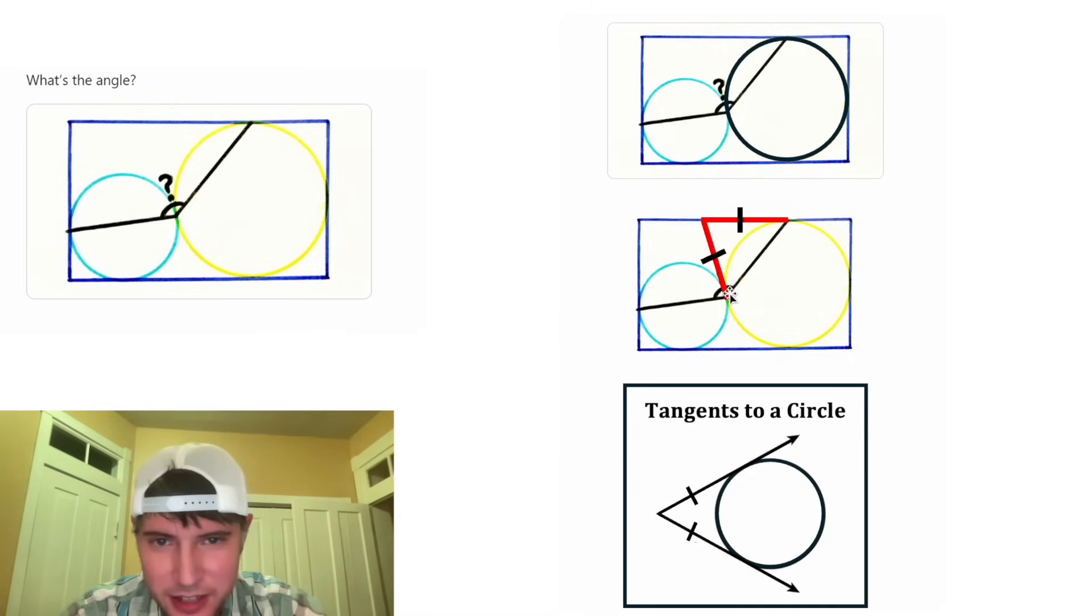And then if we take this line and make it all red, we now have a nice looking red triangle, and it's an isosceles triangle. Since these two sides are congruent, that means these two base angles are congruent. Let's call them both A degrees.